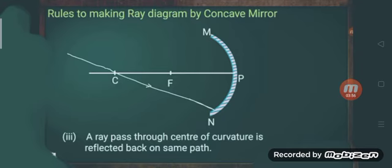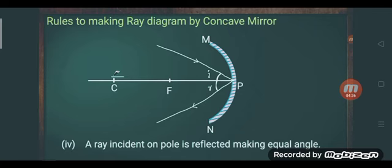If any ray comes from the center of curvature, then after reflection it goes back along the same path it came from. It does not go anywhere else — it reflects back on its own path. This is the third rule.